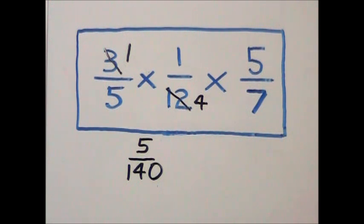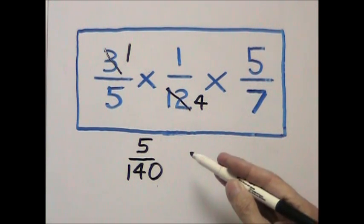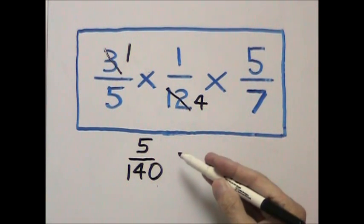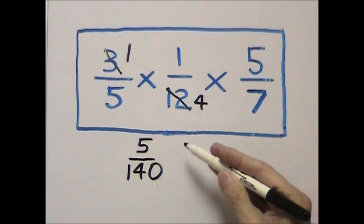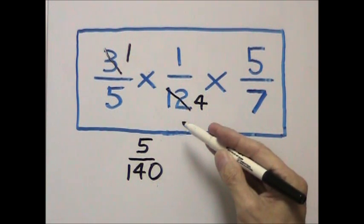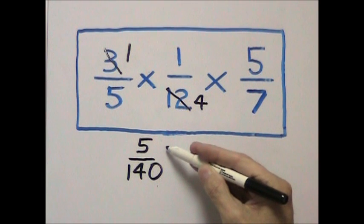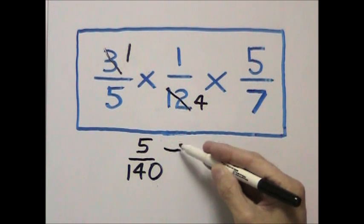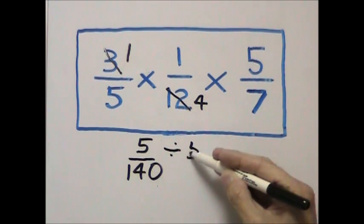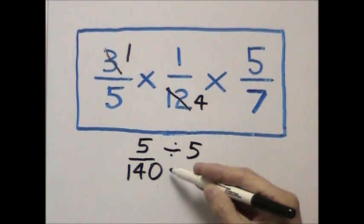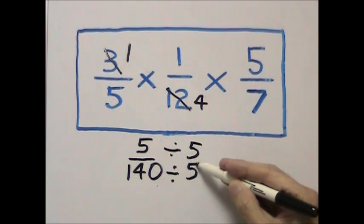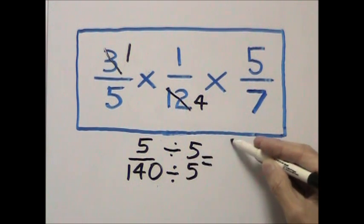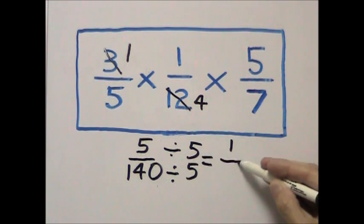Now we can simplify our answer because any number that has a zero at the end is divisible by 5. So we divide both the numerator and the denominator by 5 to get a final answer of 1 twenty-eighth.